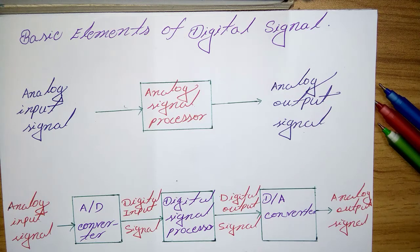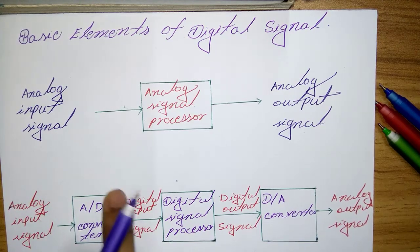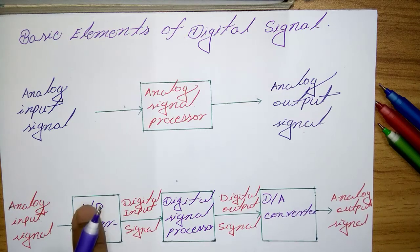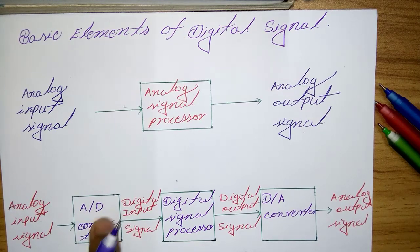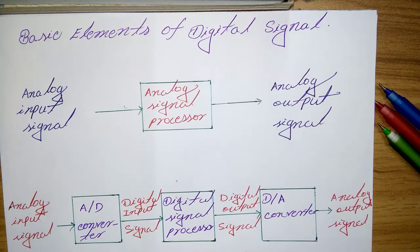This interface is called an Analog-to-Digital Converter, or ADC. The analog input signal is fed into the ADC, and the output of the analog-to-digital converter is a digital signal that is appropriate as an input to the digital processor.